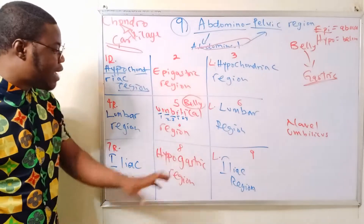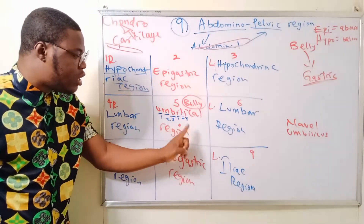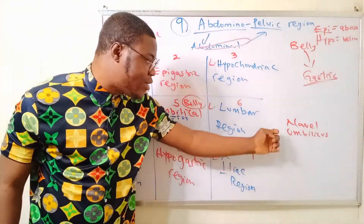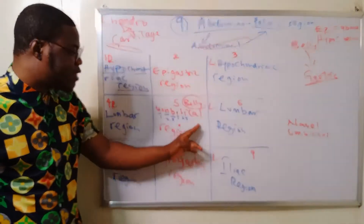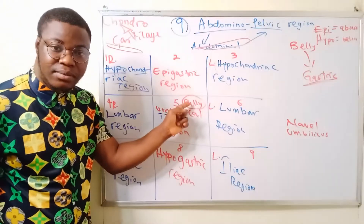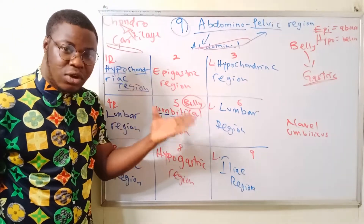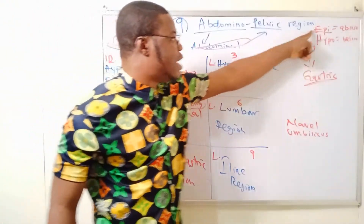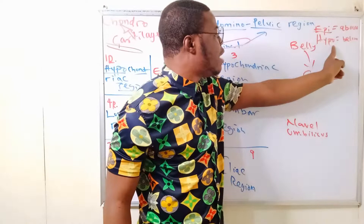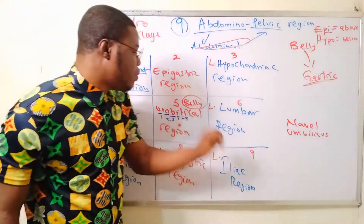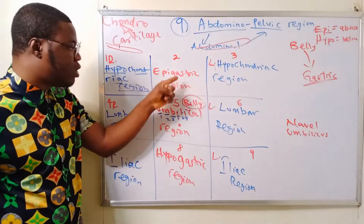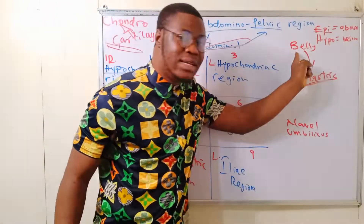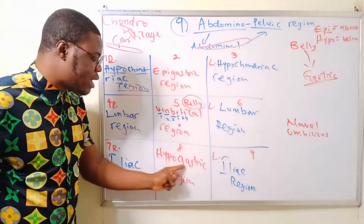Quick recap: Region five is the umbilical region, named because the umbilicus — a remnant of the umbilical cord — is located there. The belly is called gastric. 'Epi' means above, so the region above the belly is the epigastric region. 'Hypo' means below, so the region below the belly is the hypogastric region.